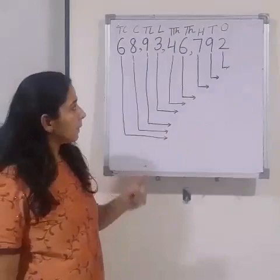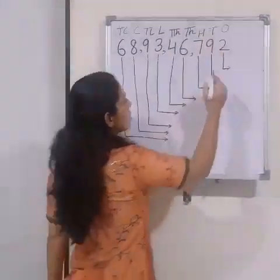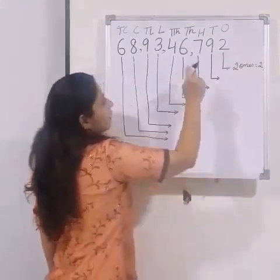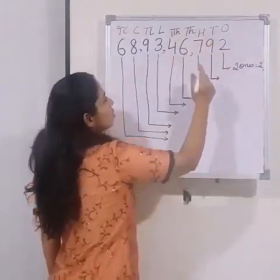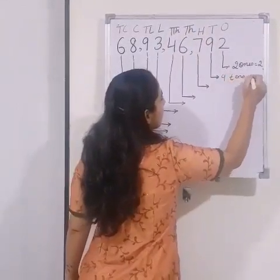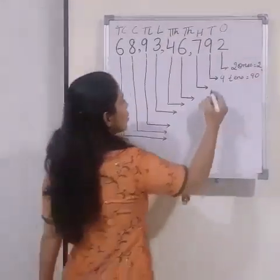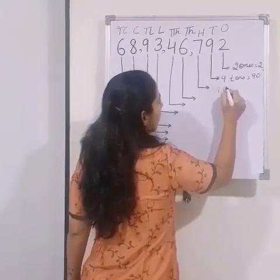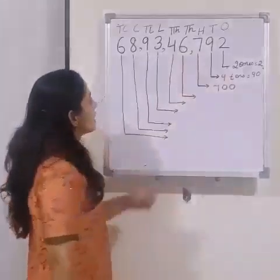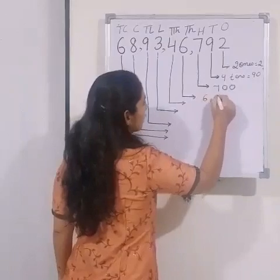Now we will find the place value of each digit. 2 is at ones place, so its place value is 2. 9 is at tens place, so its place value is 90. 7 is at hundreds place, so its place value is 700. 6 is at thousands place, so its place value is 6,000.